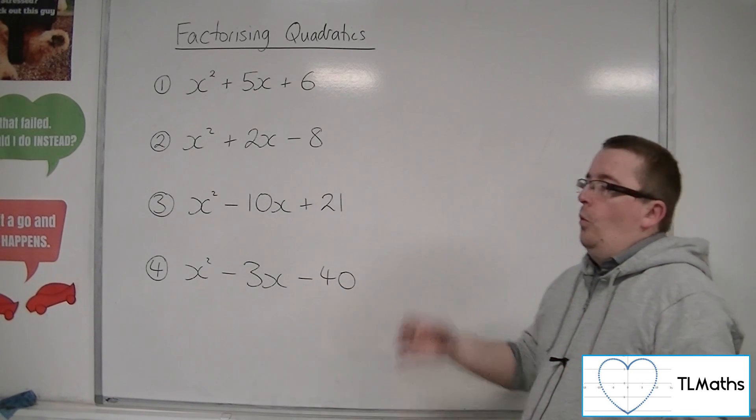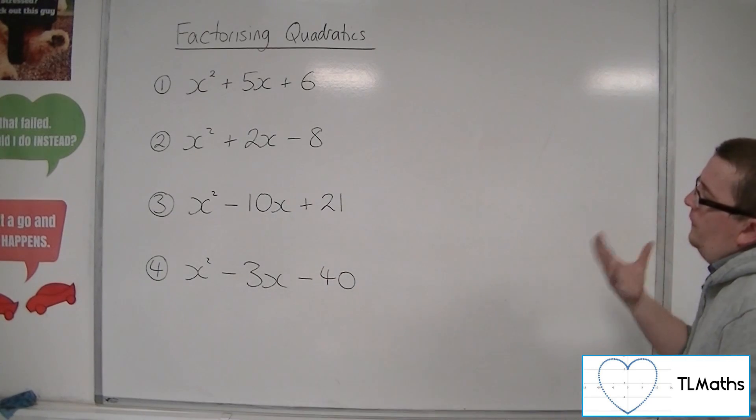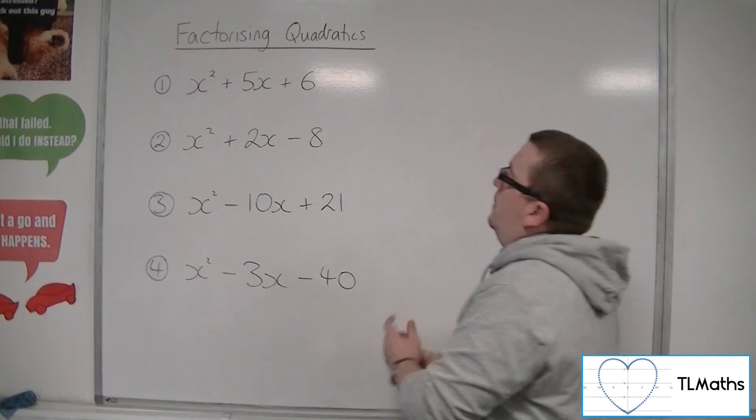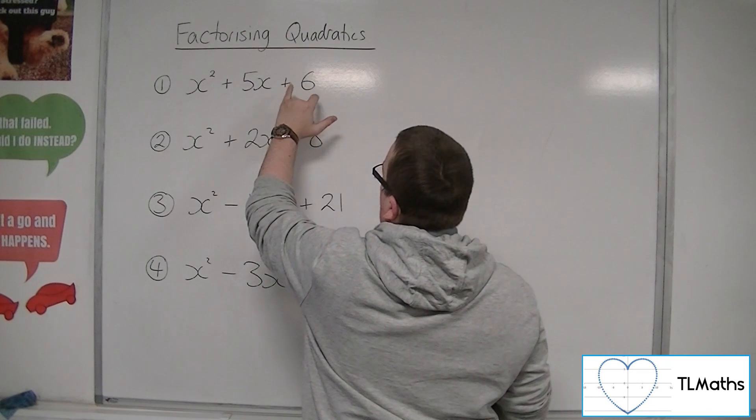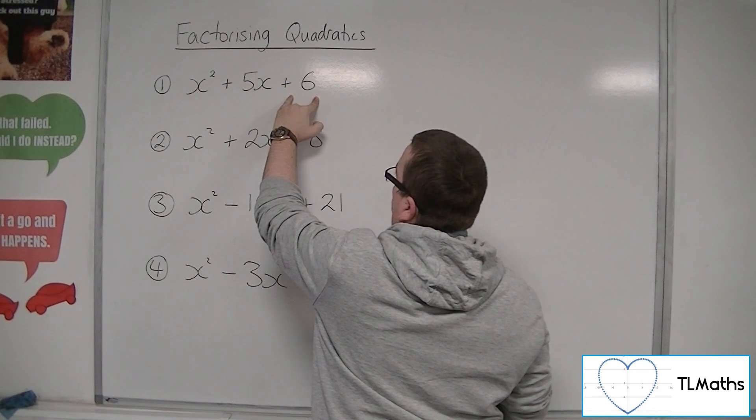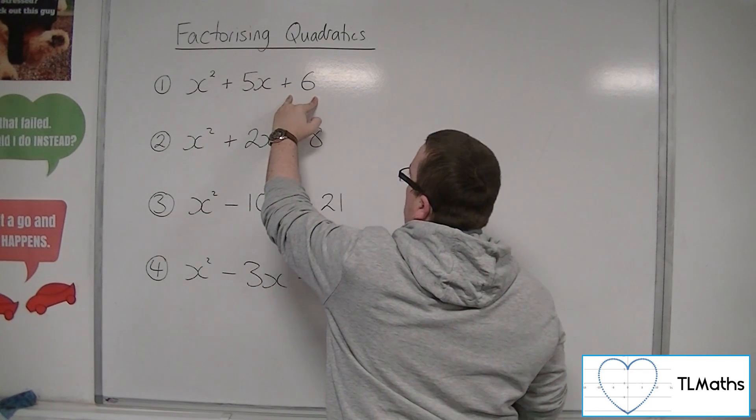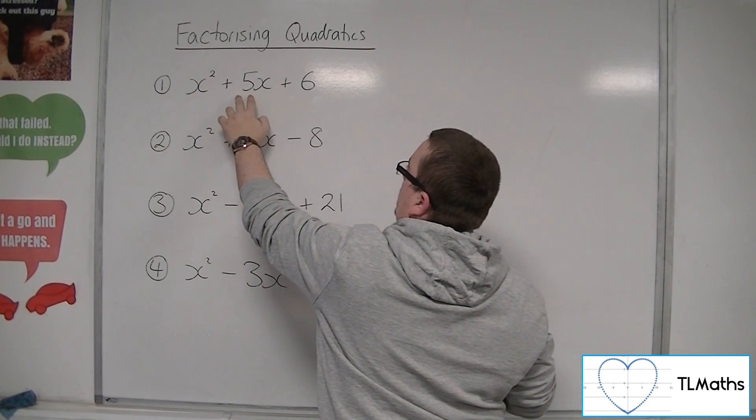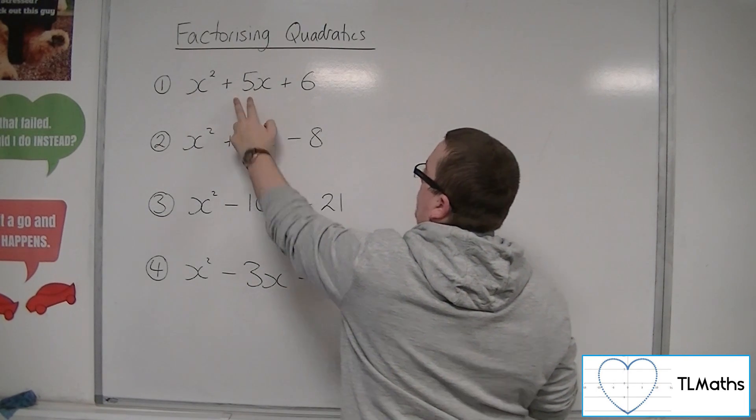What you're trying to do here is find two numbers that multiply together to make the number on the end, the constant term, the plus 6, but add together to make the coefficient of x, in this case 5.